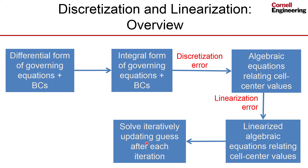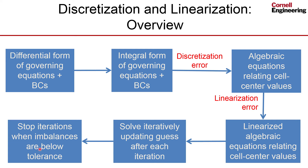We stop iterating when our imbalances of mass and momentum are below some selected tolerance. If we had the exact solution to the nonlinear algebraic equations, the imbalances of mass and momentum would be zero. But since we have a linearization error, it's never going to be zero — but if it's below a tolerance, then our linearization error would be acceptable.